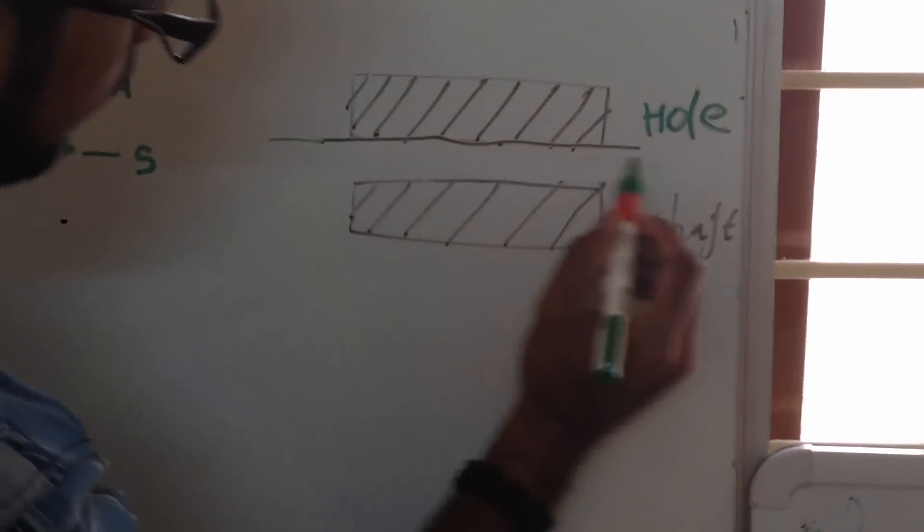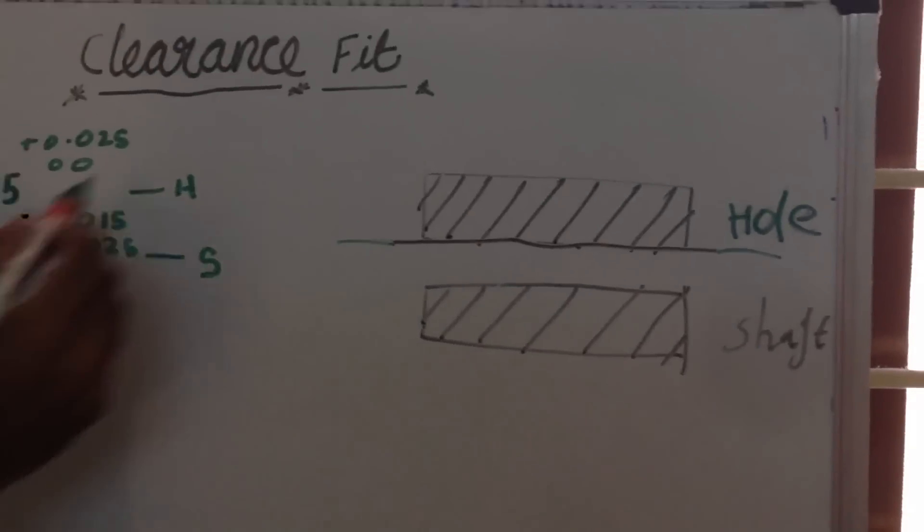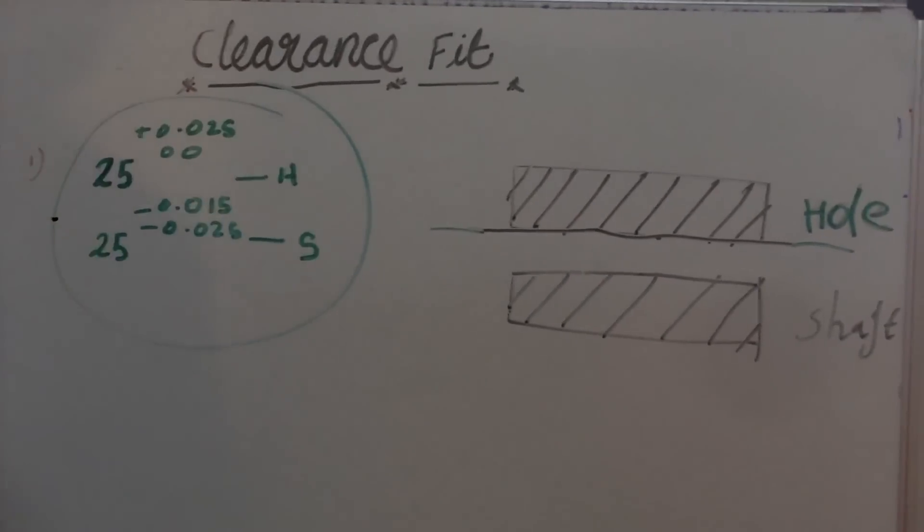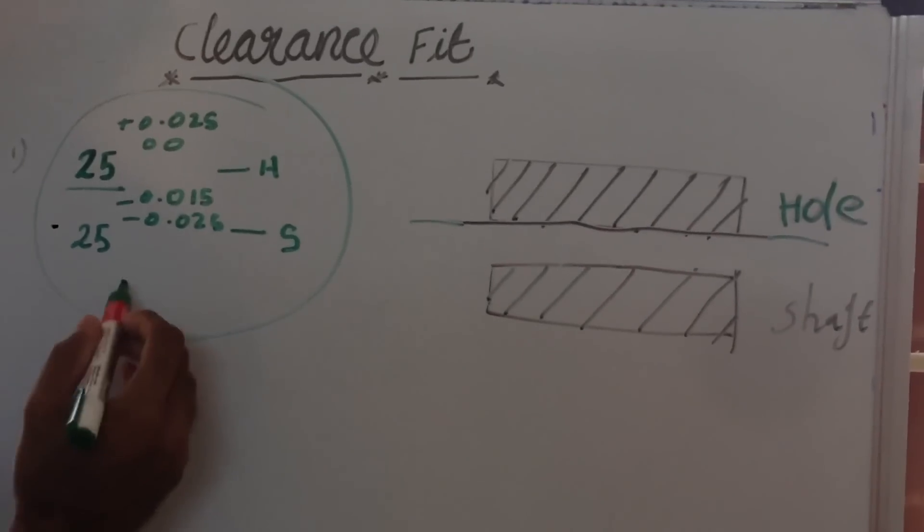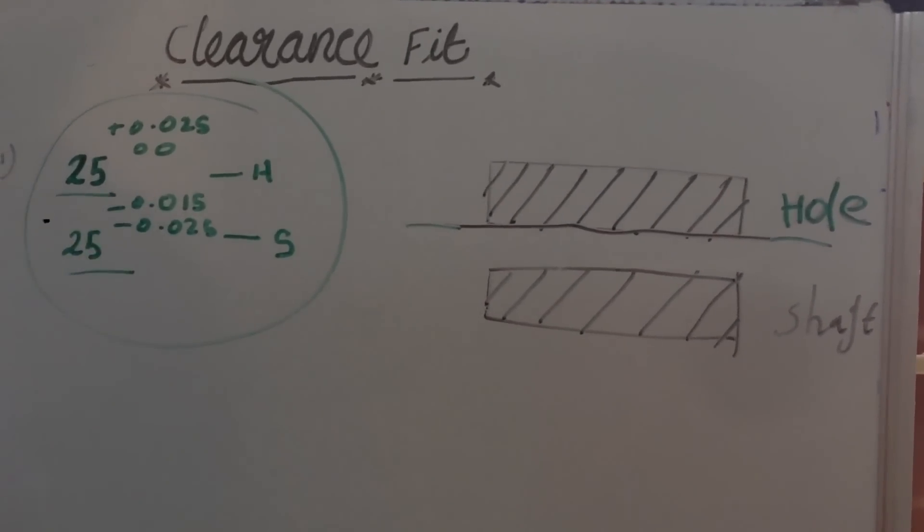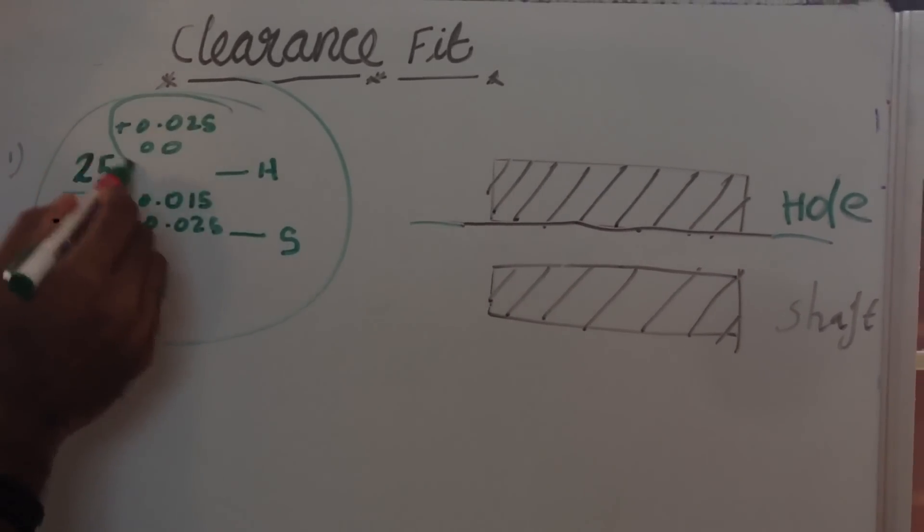Let us take this diagram. We can do a problem in clearance fit. In this problem it gives the dimensions of hole and this gives the dimensions of shaft, in which the tolerances are represented here.